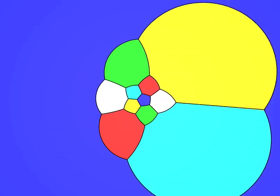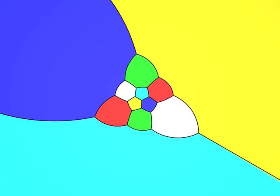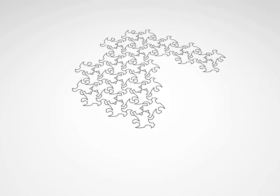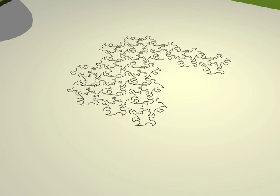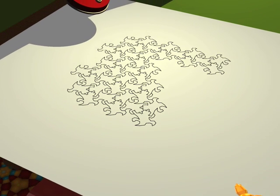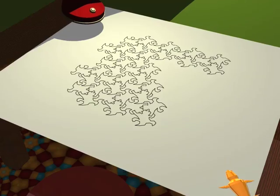These five solids have always fascinated geometers. The Greek philosophers attributed a magical importance to them by associating to each of them one of the fundamental elements from which the world is formed. We call these figures the platonic solids.